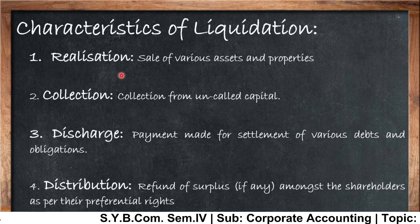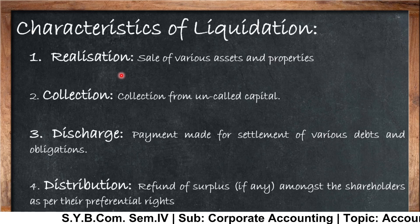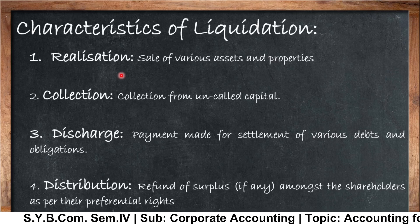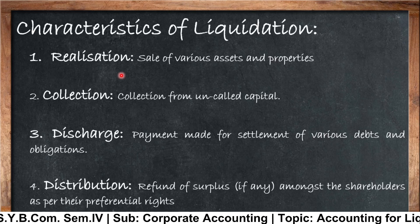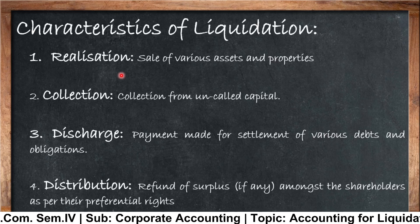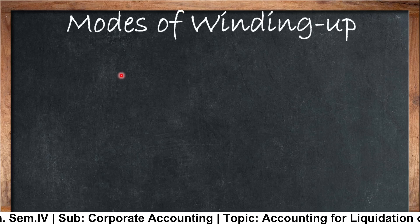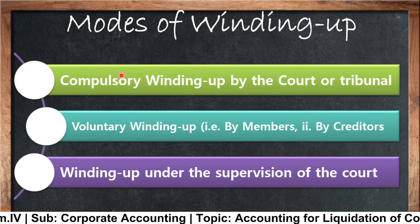These are the four characteristics of liquidation. The main work of the liquidator is to sell all the assets, pay all the money, and if there is any surplus or any amount remaining, he can pay that amount to the shareholders as per their preferential rights. Preference shareholders have a preferential right, and after that he can pay the equity shareholders. Here you can see the modes of winding up — basically there are three modes.